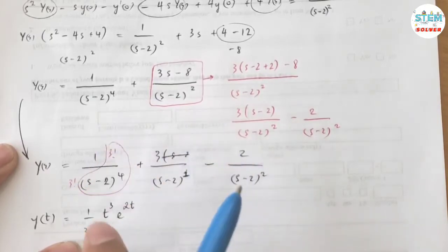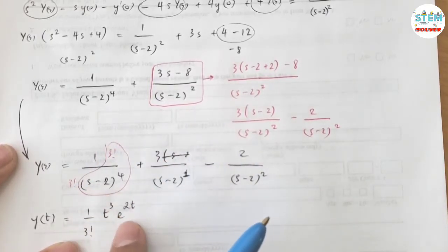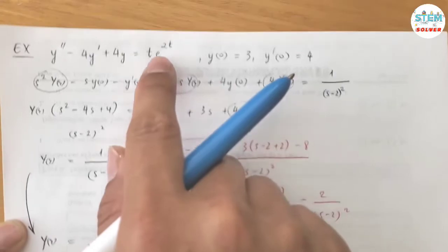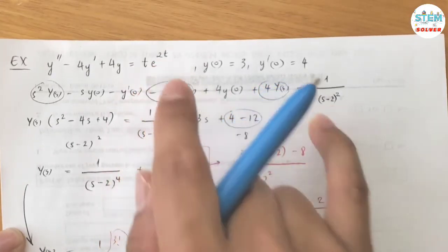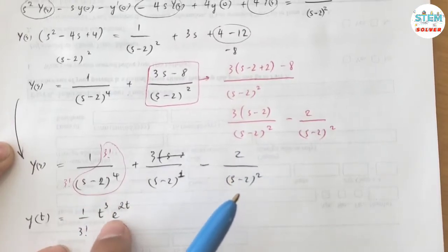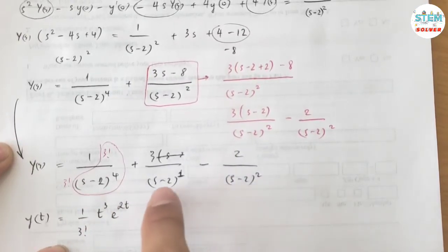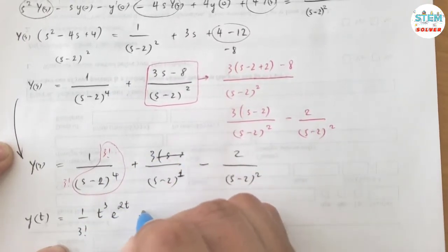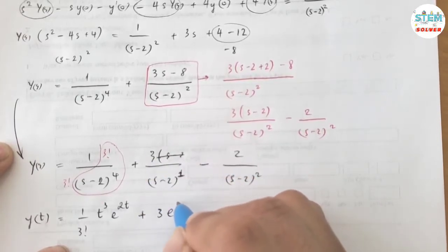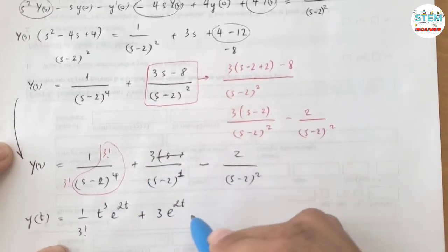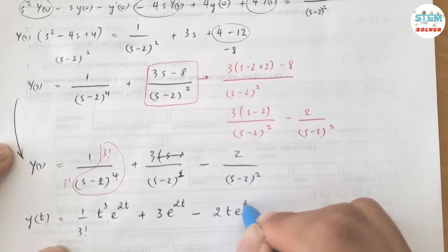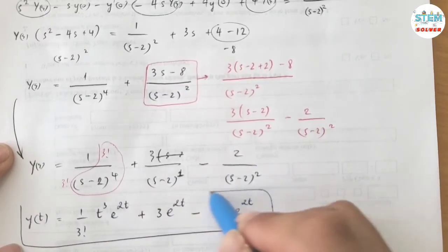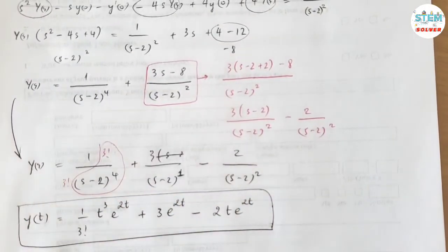And this is T cubed and minus 2 is just a shift, similar to what you have up here. So when you have a shift, you have to have S minus 2, and same thing here, you get your backward. And for this one, it is simply 3e to the 2t. And last, this one, you have 2te to the 2t. So this is your final answer. That's it.